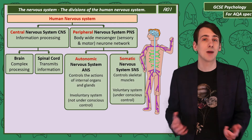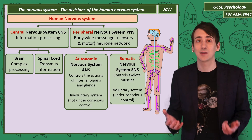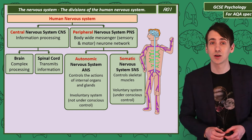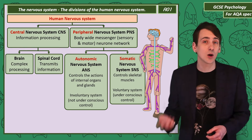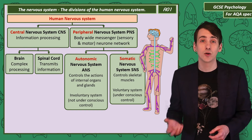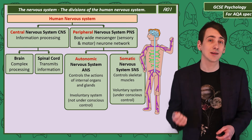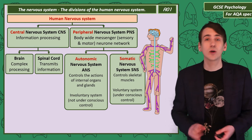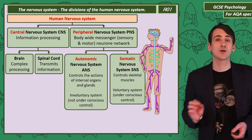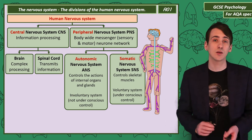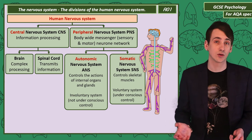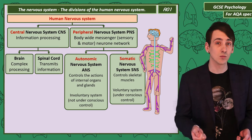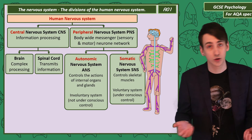The somatic nervous system, or SNS, is what we use when we decide to perform an action. So if you pick up an apple, you're using your somatic system to coordinate your muscles. We call this a voluntary system, as it's under conscious control — you decided to move, or not to.